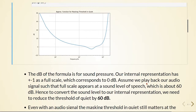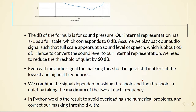The dB in the formula is for sound pressure. Our internal representation has plus or minus one as full scale, which corresponds to zero dB. So assume we play back our audio signal such that the full scale appears at the sound level of speech, which is about 60 dB. Therefore we need to convert the sound level to our internal representation, and we need to reduce the threshold in quiet by 60 dB.